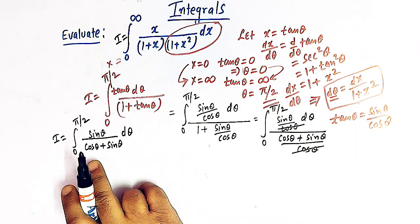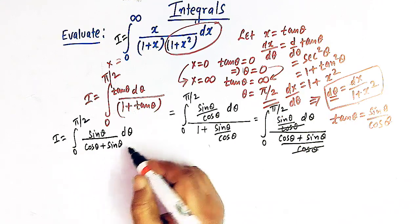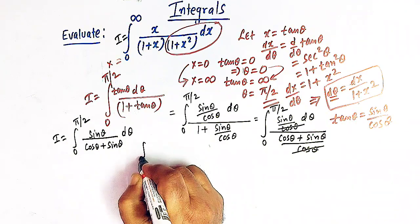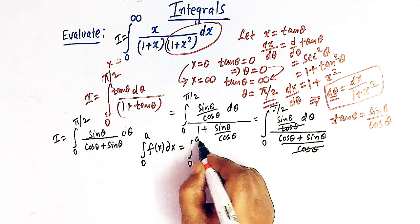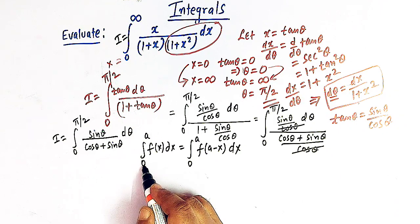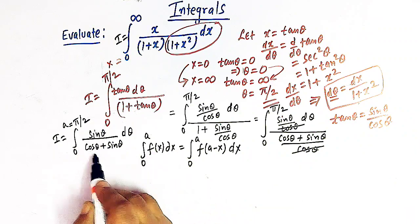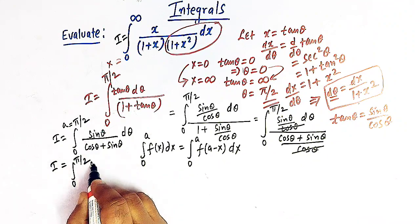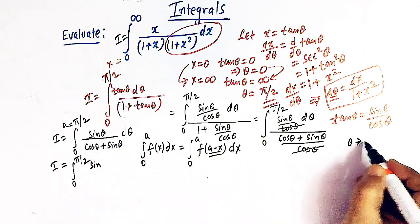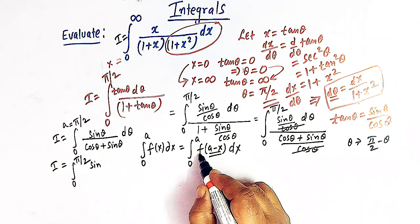We now evaluate this integral using an important property of definite integrals, which states that the integral from 0 to a of f(x) dx equals the integral from 0 to a of f(a minus x) dx. Here a equals π/2 and f(θ) equals sin θ over (cos θ plus sin θ). Applying the property, θ is replaced by π/2 minus θ.